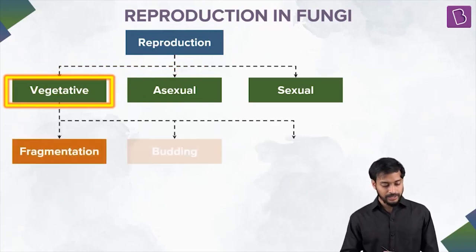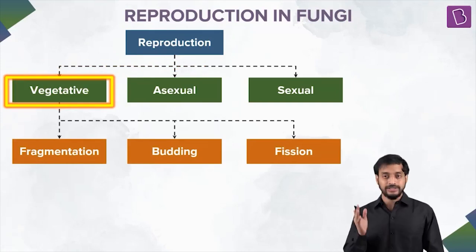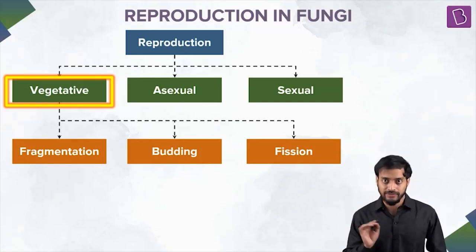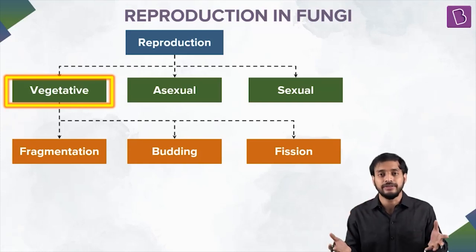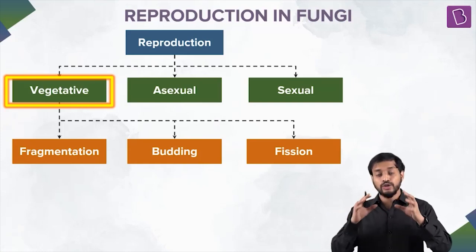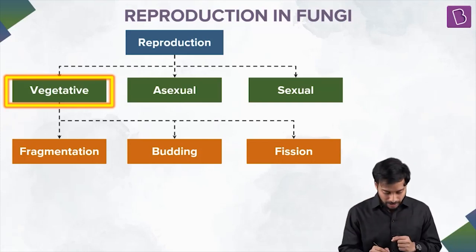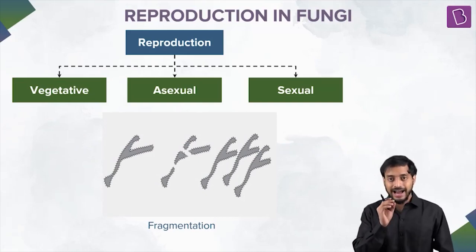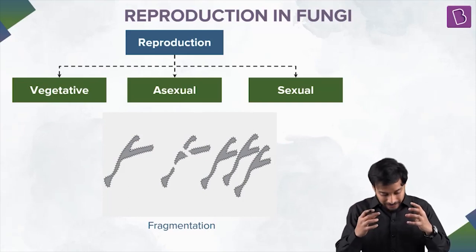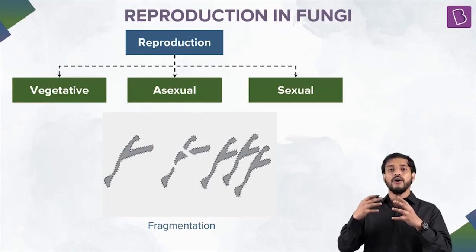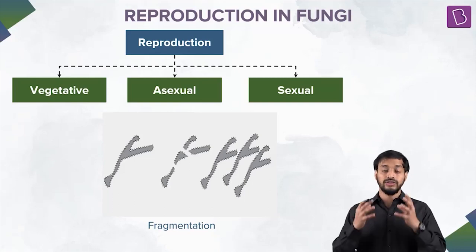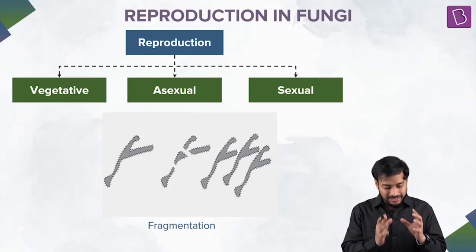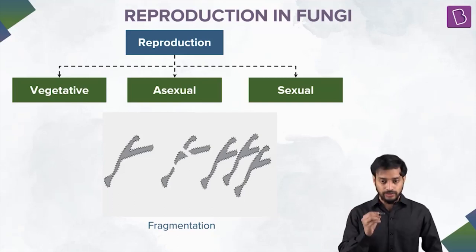Now let's talk about the vegetative form. This can happen in these ways: fragmentation, budding, and fission. First, fragmentation — something will get fragmented. See this image: the hyphae get fragmented, and later on all these fragments start forming the mycelia. They'll grow and start forming mycelia. This is an example of vegetative reproduction in fungi, and it is known as fragmentation.